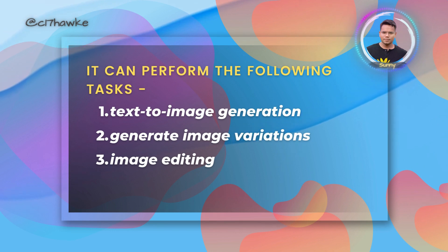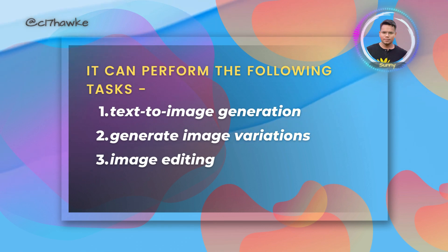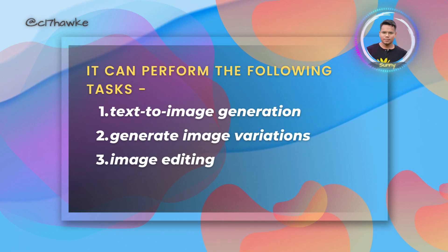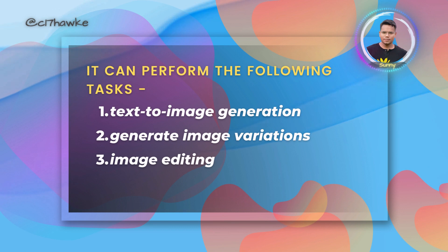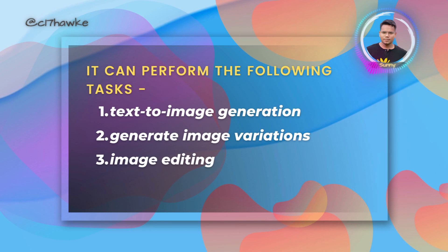Second is image variation, where it generates variations of an input image. Third is image editing, where it generates an edited image from the inputs you pass — that is a text prompt, an input image, and a mask image.